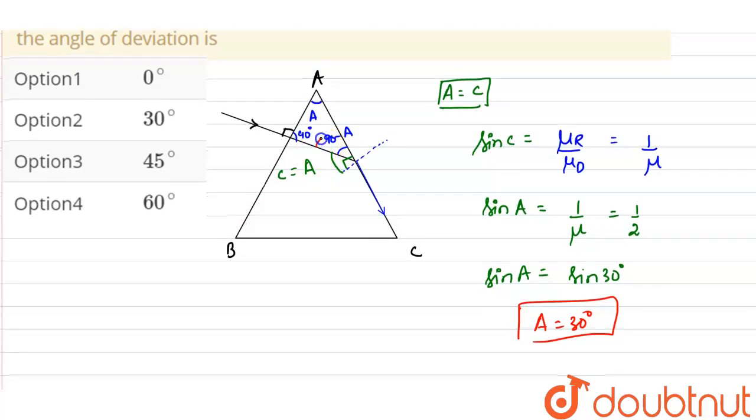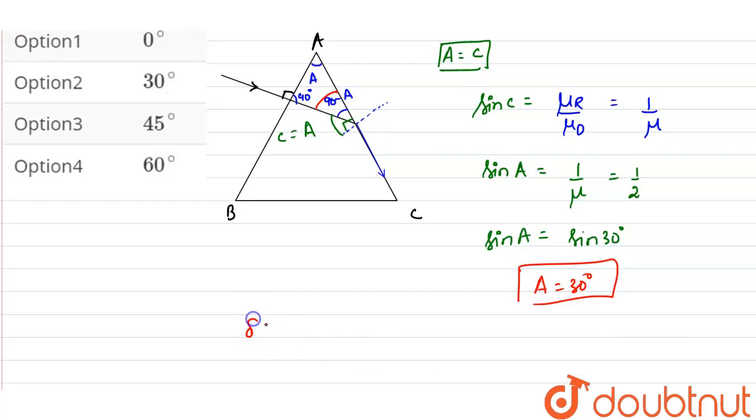Therefore, angle of deviation will be 90 minus A. So this will be equals to 90 minus 30, so it will be 60 degrees.